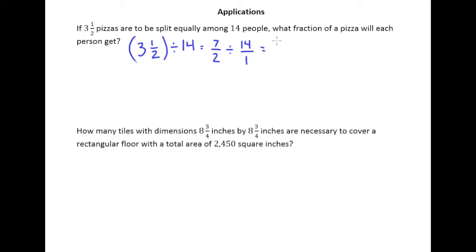We're going to multiply by the reciprocal, or flip, of 14 over 1, which is 1/14. We can see that we can do some canceling: 7 divided by 7 is 1, and 14 divided by 7 is 2. That leaves us with 1 times 1 on top, giving us 1, and 2 times 2 on the bottom gives us 4. So each person gets 1 quarter of a pizza.